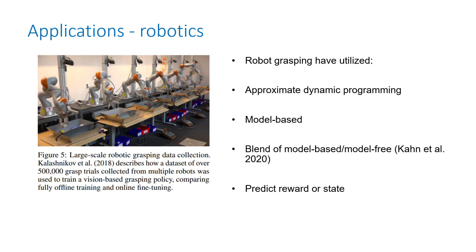One of the most common applications of offline reinforcement learning is robotics. The robotic hand for different tasks is one of the most common benchmarks. It has been used successfully for grasping using dynamic programming, model-based methods, a blend of model-based and model-free, and approaches that predict the reward or the states in their models.